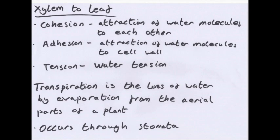Once water is in the xylem, three key concepts apply: cohesion, adhesion and tension. Cohesion is the attraction of water molecules to each other through hydrogen bonds. Adhesion is the attraction of water molecules to the cell wall, particularly in the xylem. This is described by the cohesion-tension theory, which relies on the plant maintaining an unbroken column of water all the way up the xylem. Water moves upward as cohesion keeps molecules together and adhesion keeps them attracted to the xylem walls.